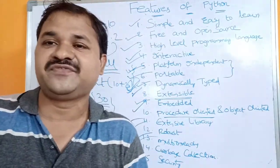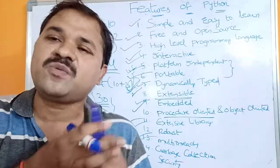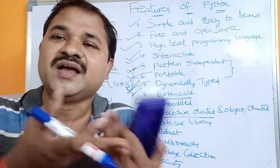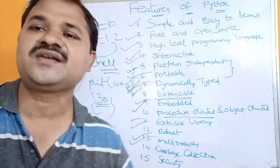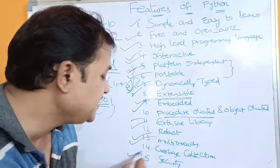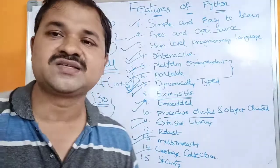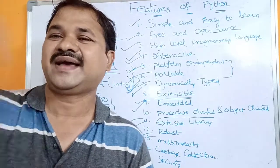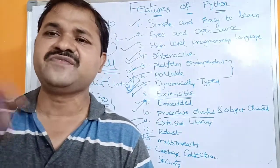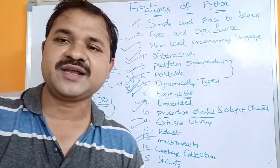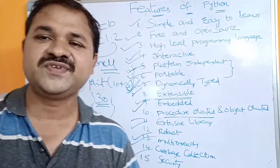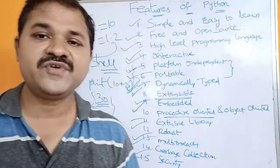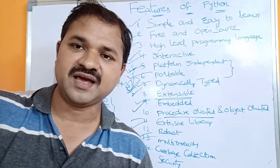The next feature is garbage collection. Python supports a garbage collector, which means if there is an object that is no longer used, its memory will be destroyed implicitly by the Python garbage collector. The final feature is security — Python is a very secure programming language with excellent security features. These are the various features of the Python programming language.